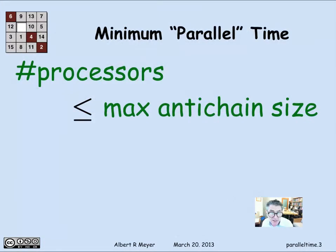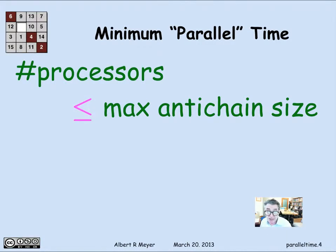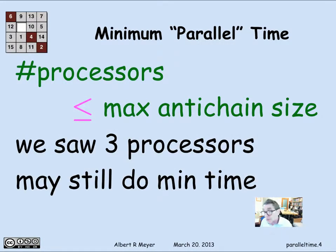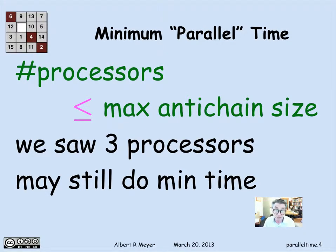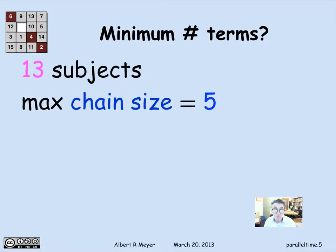However, it's a coarse upper bound. Although the number of processors needed to achieve minimum parallel time is at most the maximum anti-chain size, in the previous example you could actually get away with three processors. It was possible to schedule the subjects so you only took three courses a term and still finished in minimum time. Can you do better than three? A trivial argument says no, because in that example we had 13 subjects to schedule.